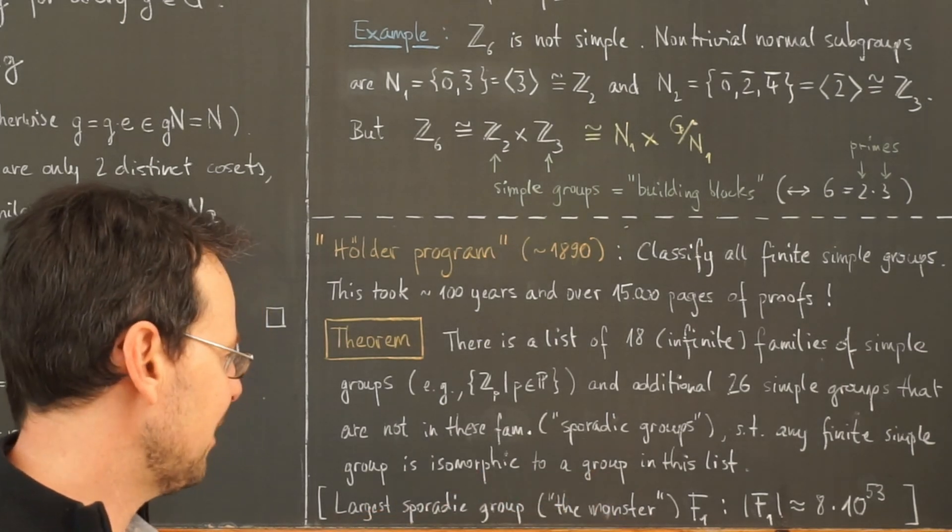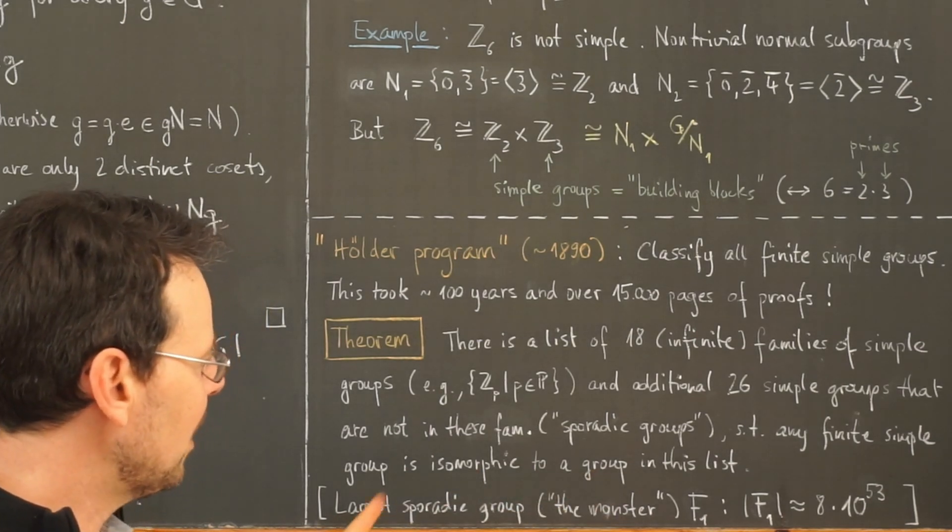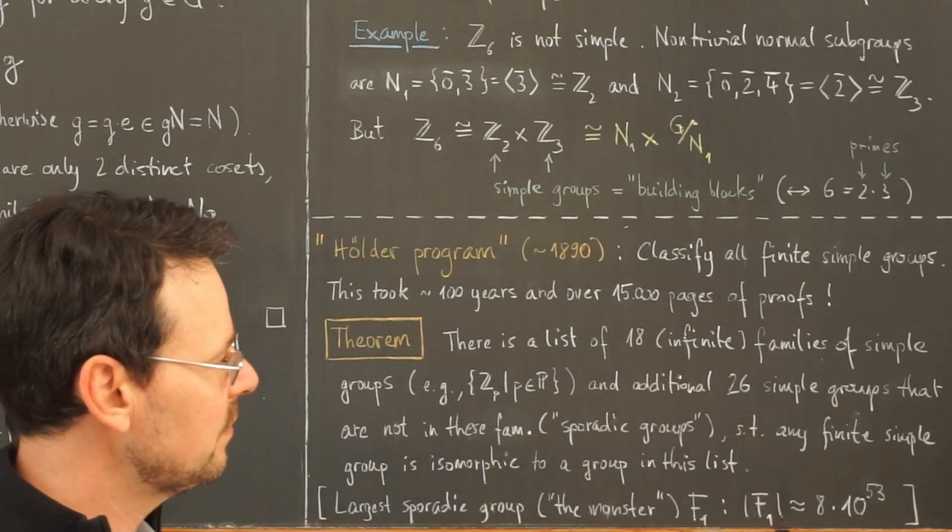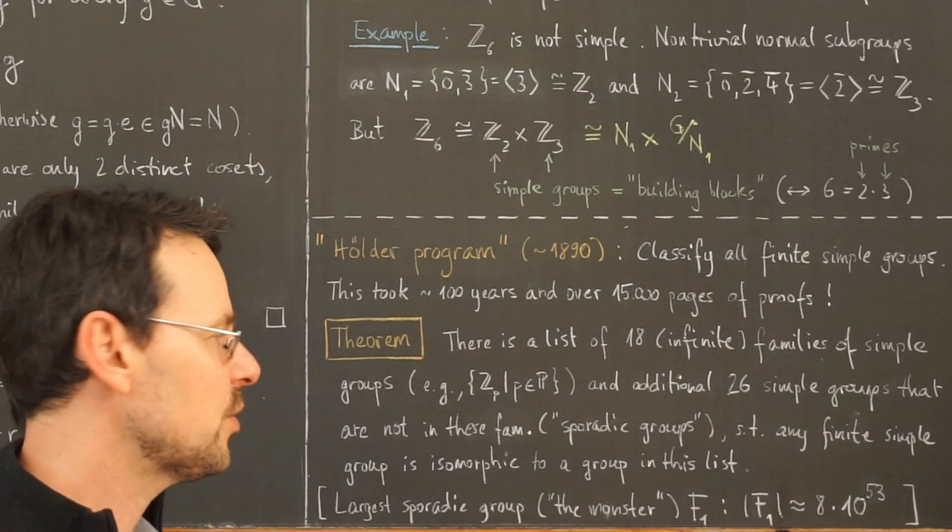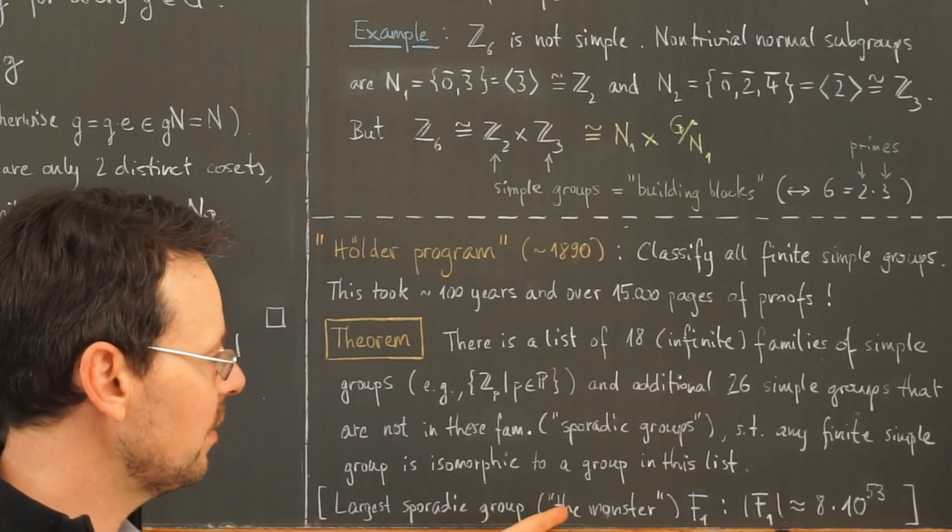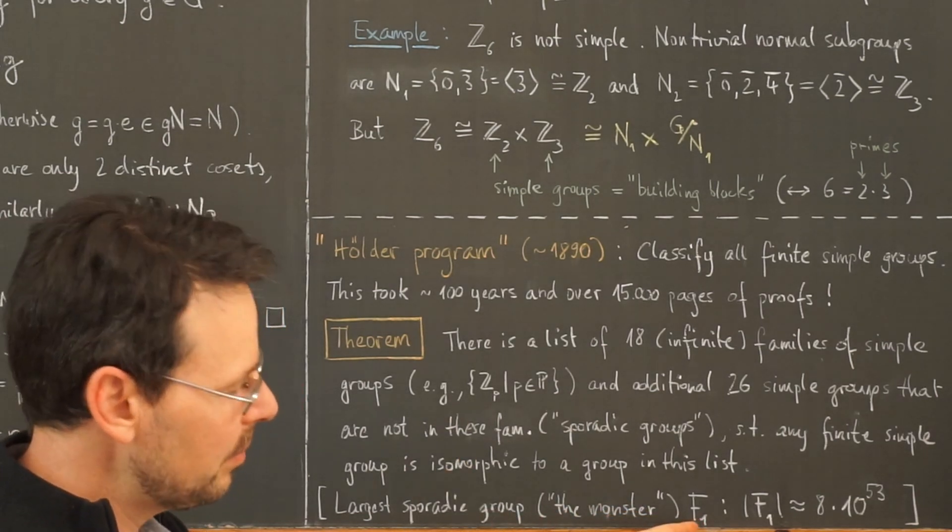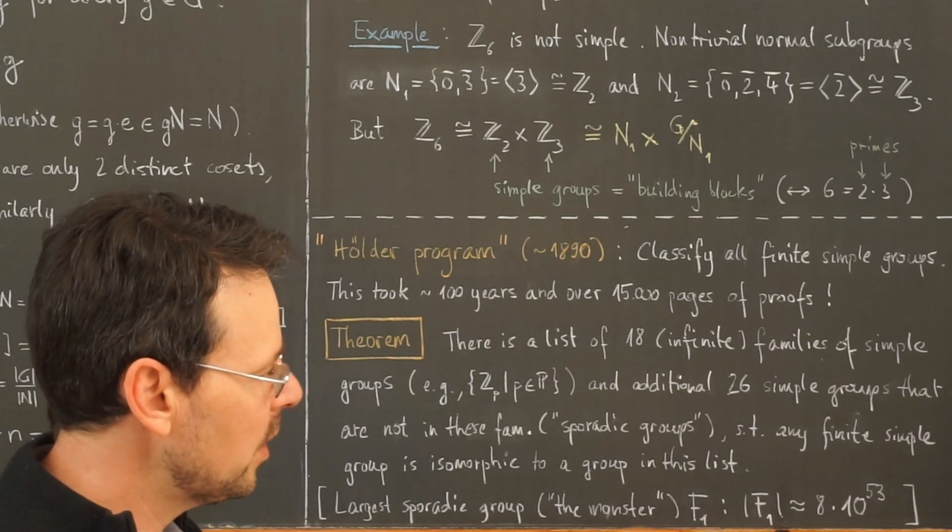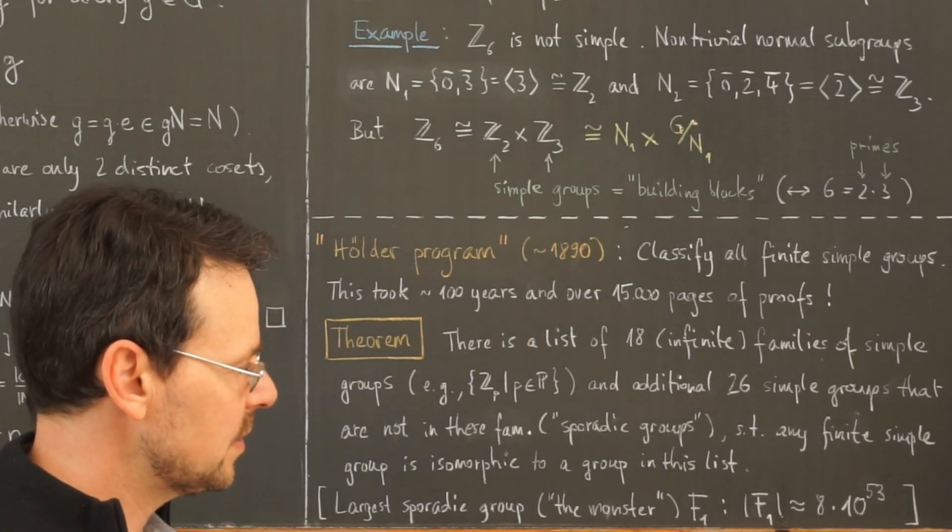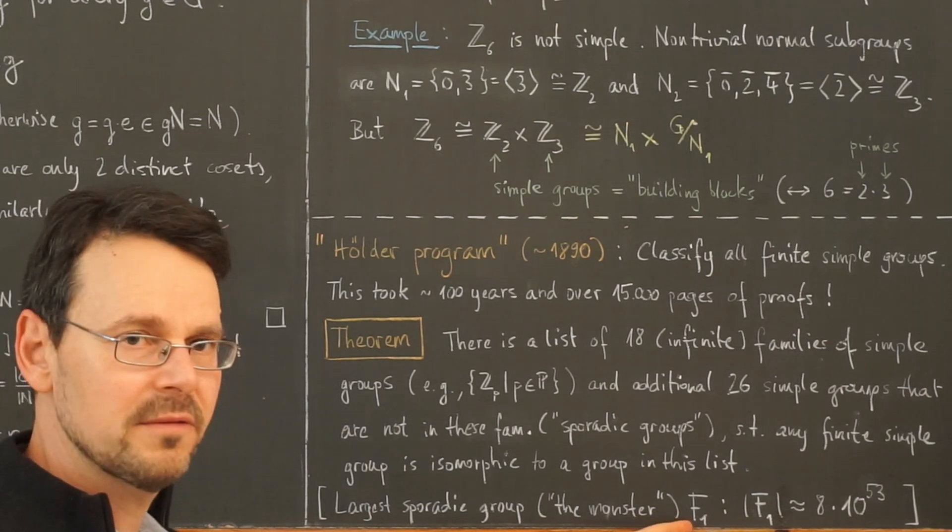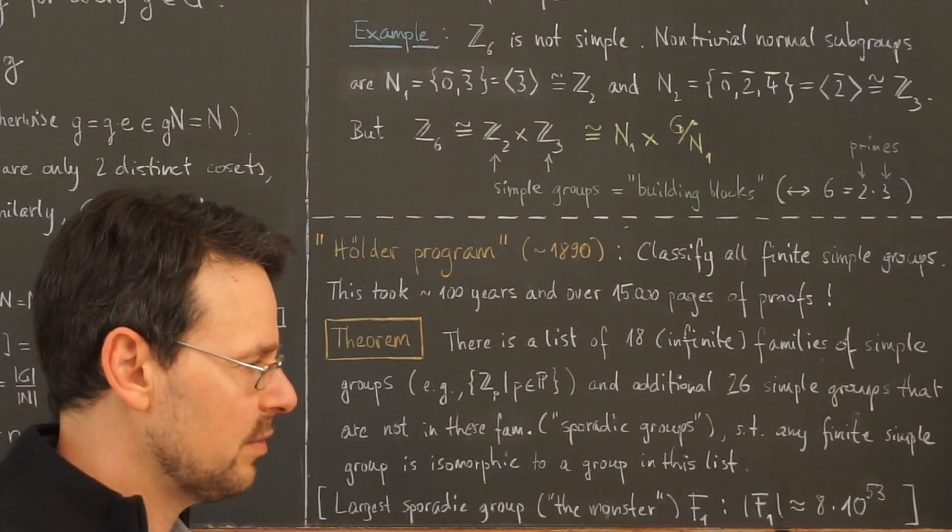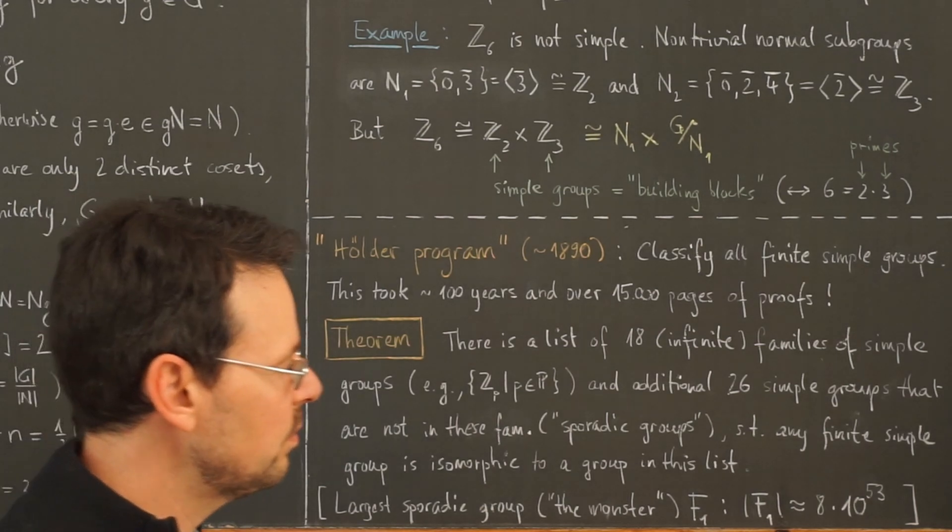This is an interesting fun fact. The largest of these sporadic groups, of these 26 exceptional groups, is called the monster group, sometimes denoted with m, but most often with F1, to honor one of its two architects, Bernd Fischer, a German mathematician who discovered or constructed this group here.